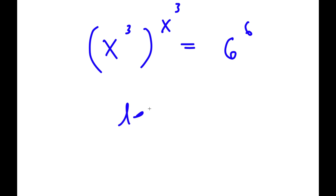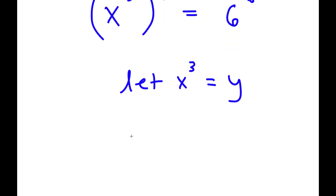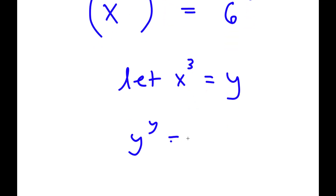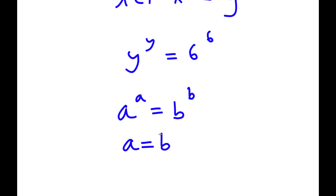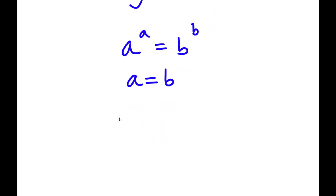Now I'm going to let x to the power of 3 equal to the variable y. So now I have y to the power of y is equal to 6 to the power of 6. And if I have something in the form a to the power of a equals b to the power of b, this means that a is equal to b. So in this case y is equal to 6.